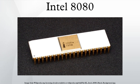The 8080 was used in many early microcomputers, such as the MITS Altair 8800, Processor Technology Sol-20 terminal computer, and IMSAI 8080 microcomputer, forming the basis for machines running the CP/M operating system. Even in 1979, after the introduction of the Z80 and 8085 processors, five manufacturers of the 8080 were selling an estimated 500,000 units per month at a price of around $3 to $4 per unit.